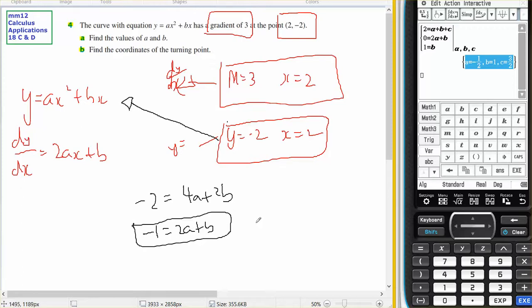That's equation number 1. And I'm going to sub this into that one because it's about the gradient equaling 3. So 3 equals when X equals 2, so 4A plus B is equation number 2.